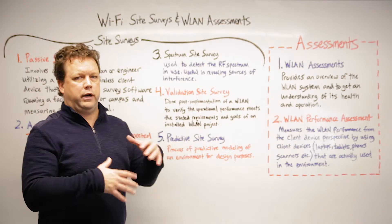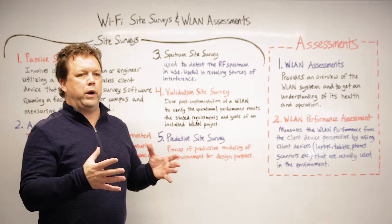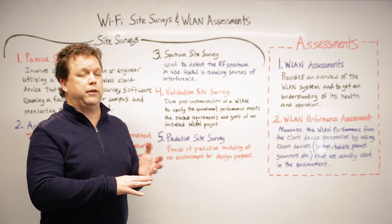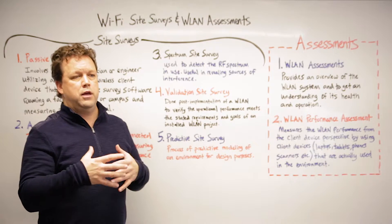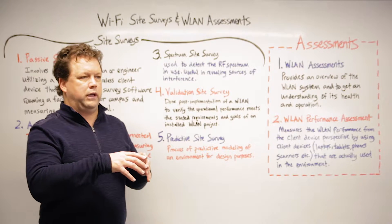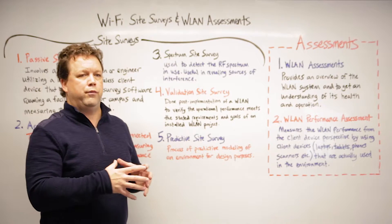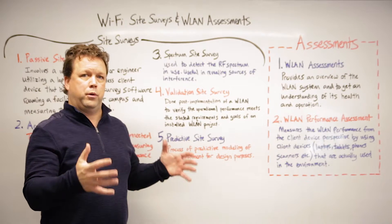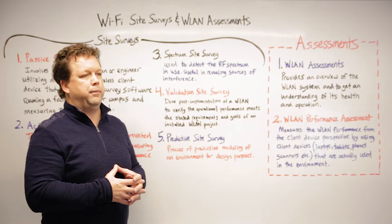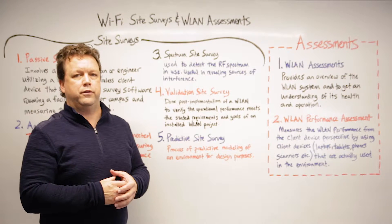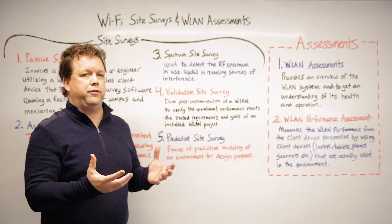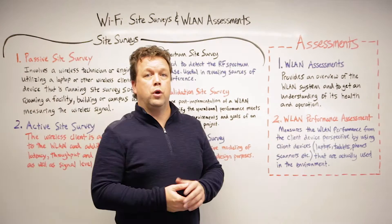Those attributes include length, width, height — in a warehouse it could be racking, in a building it could be elevator shafts — things that can become RF obstacles. It allows us to get a predictive model of what it takes to put a wireless network into that space, and from there we can start a project to do a budgetary quote or just to get an understanding of what it would entail.